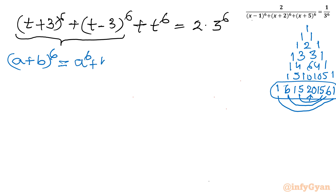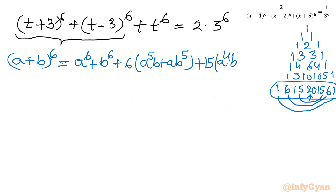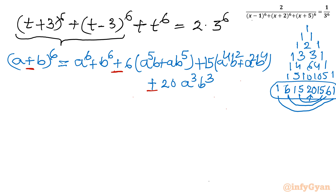So let me write: (a plus b) to the power 6 equals a⁶ plus b⁶ (multiplier 1), plus 6 times (a⁵b plus ab⁵), plus 15 times (a⁴b² plus a²b⁴), plus 20 times a³b³. This is our expansion. For (a minus b) to the power 6, the terms where b has odd power will have a sign change. So now I will write (t plus 3) whole power 6 plus (t minus 3) whole power 6.